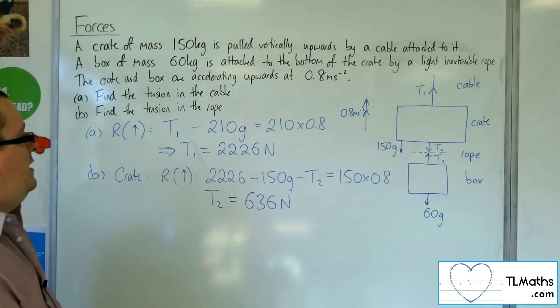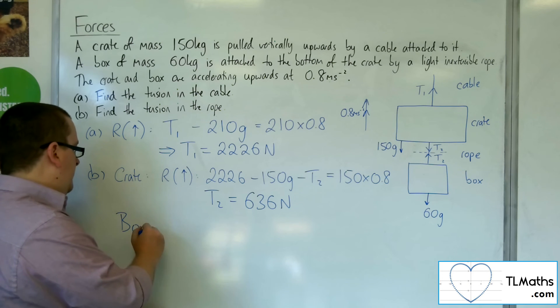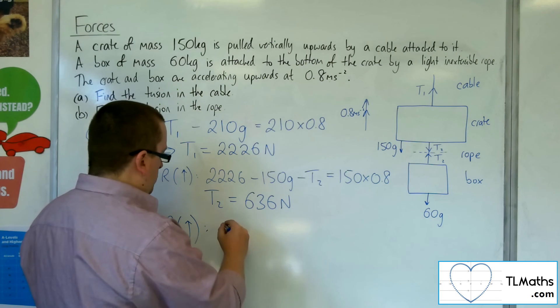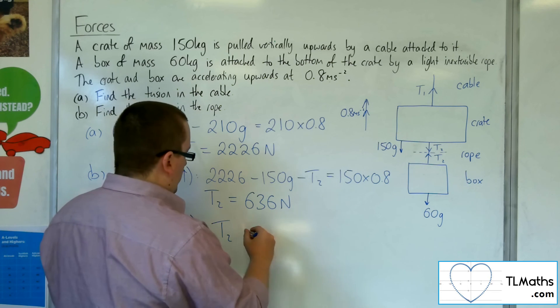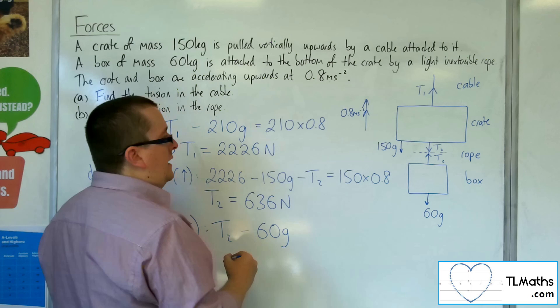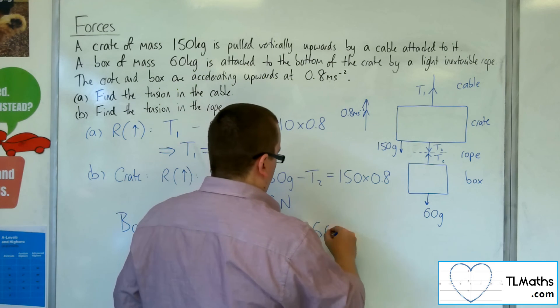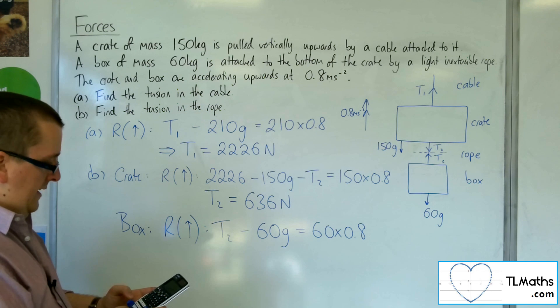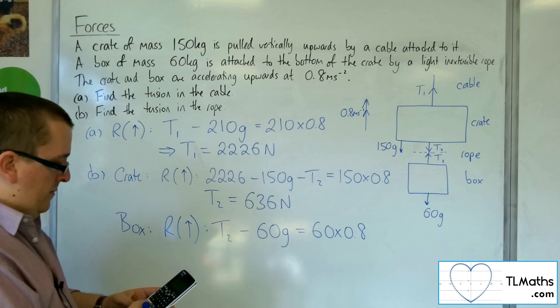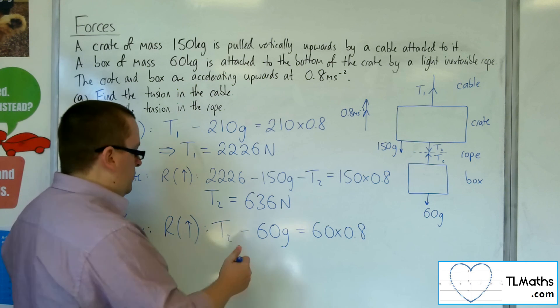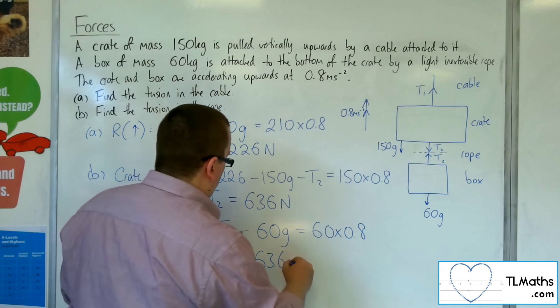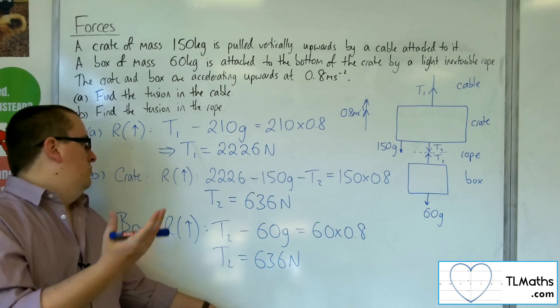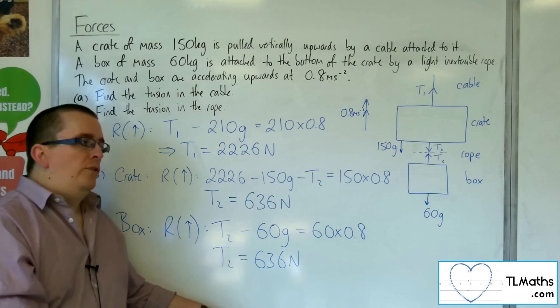You could always check by just looking at the box. So if we've taken the box instead and resolved that upwards, then I've got the T2, take away the 60G, is equal to the mass times by the acceleration. So we've got 60 times 0.8, and then add on 60 lots of 9.8, and we get 636. So it would actually have been easier to resolve upwards using the box rather than the crate. They both get exactly the same answer.